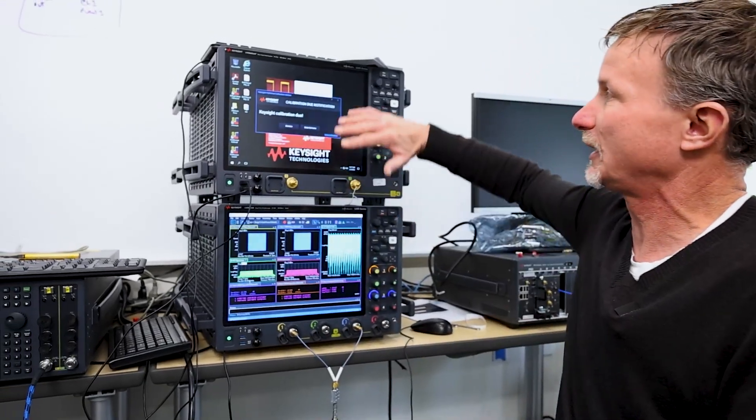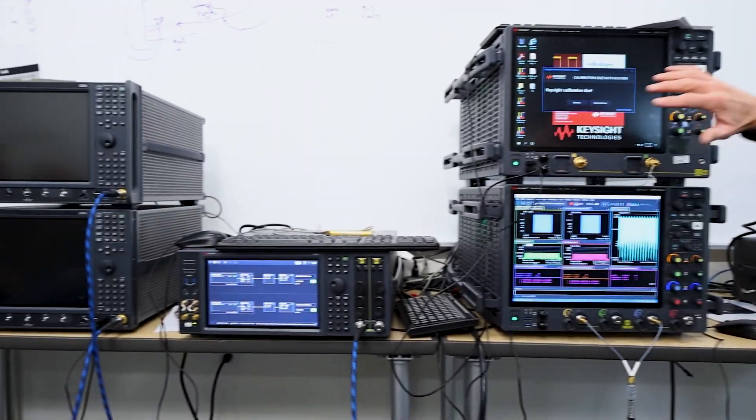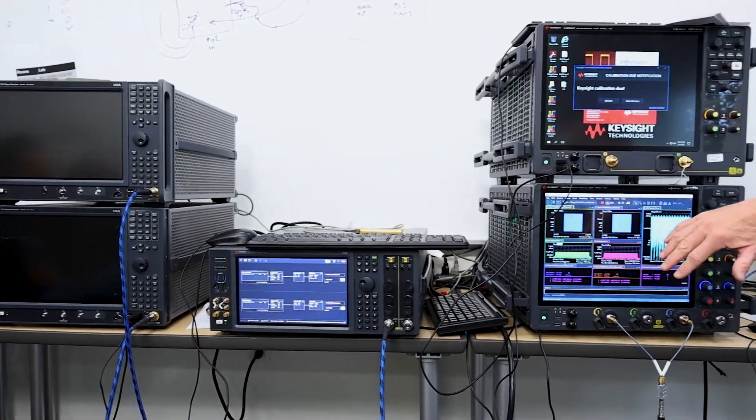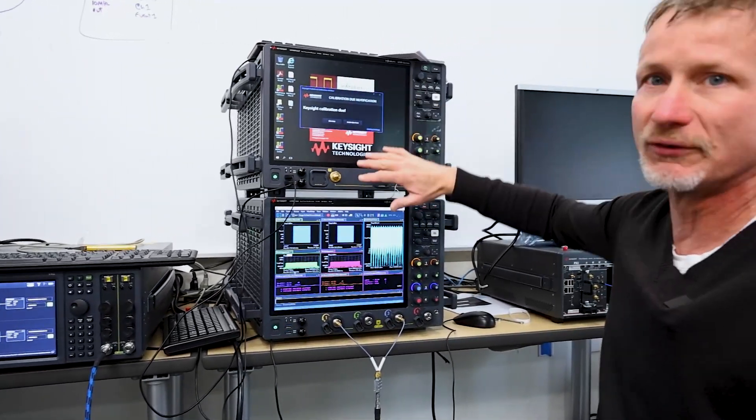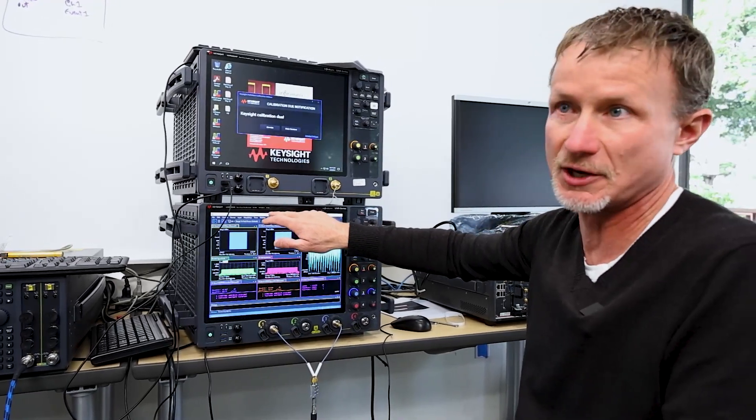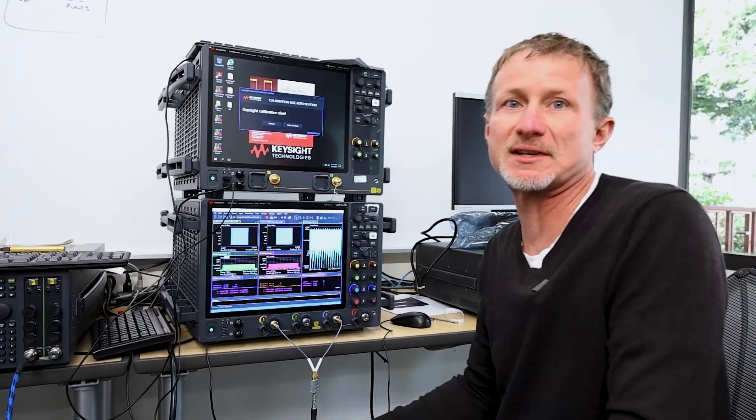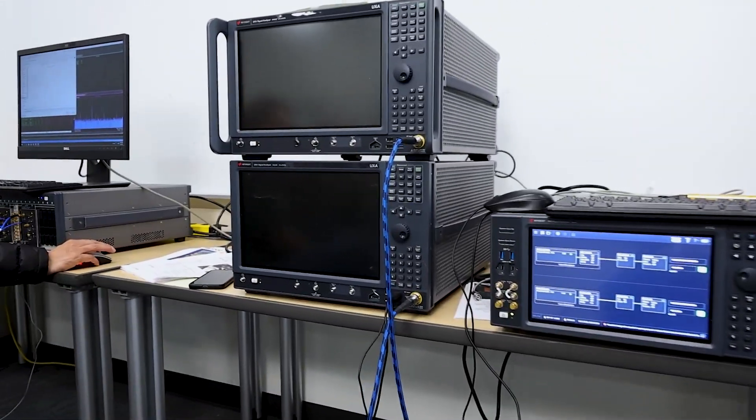What we're going to do here is we're going to make measurements with the UXR, the UXA, and the VXT. We have a couple of our flagship products. The first one here, the UXR, we have two versions of that. The first one is 128 gigasample per second scope. The other one over here is a 256 gigasample per second scope. Now you might wonder which one of those is going to give me the best measurement. So we've got them both here, we're going to make those measurements so you can see firsthand which one does better. We'll also compare that to the UXA and then the VXT.